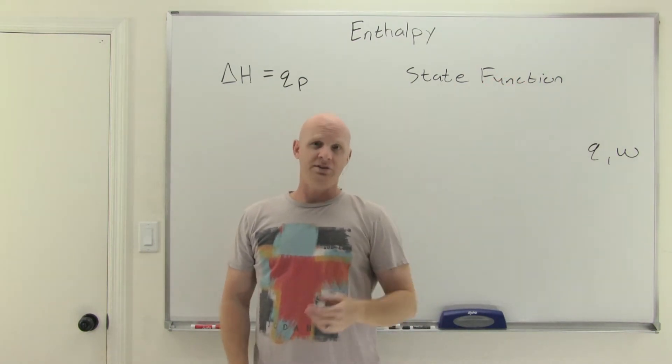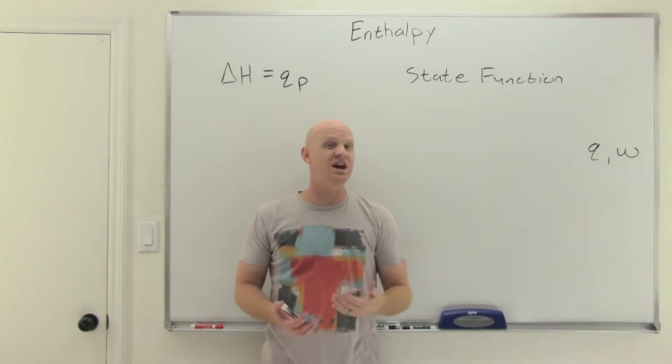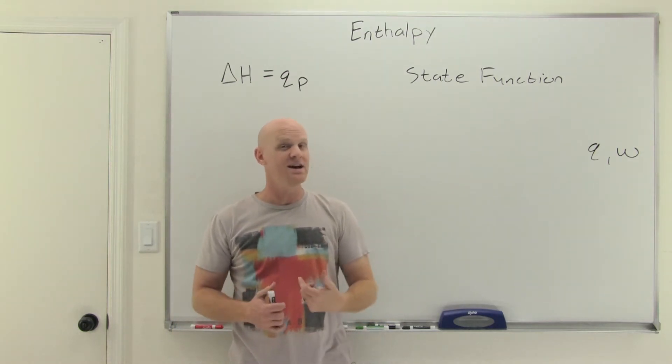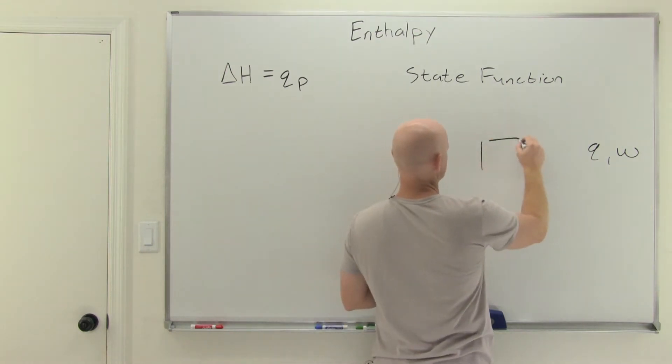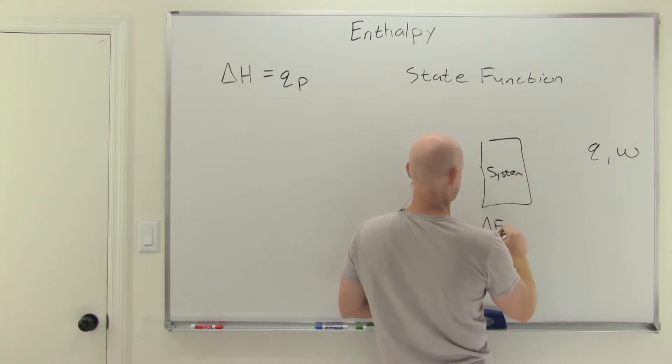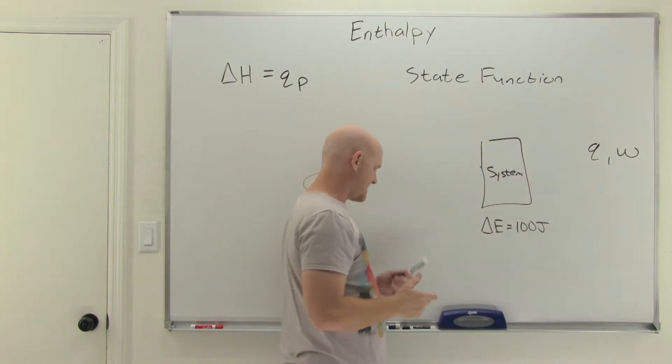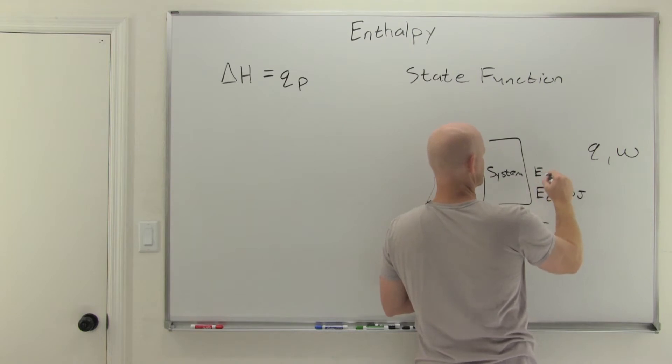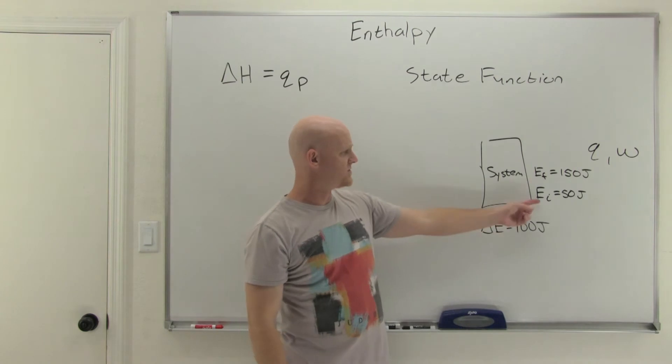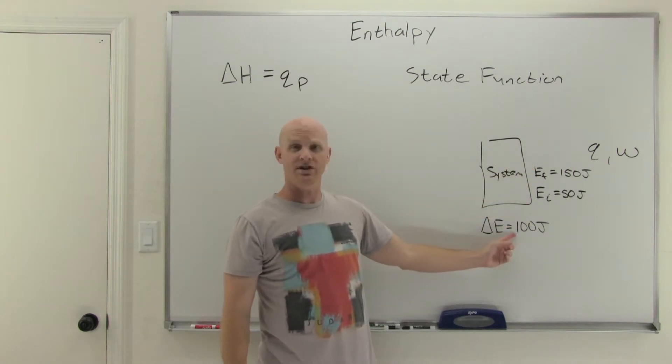It turns out that even delta E from that first law of thermodynamics, that change in internal energy, is also a state function. So let's say I told you that I had a system and that delta E for the system was 100 joules. Let's say that occurred because E initial was 50 joules and E final was 150 joules. By simply knowing the initial energy and final energy, that would be enough to calculate delta E, 100 joules.